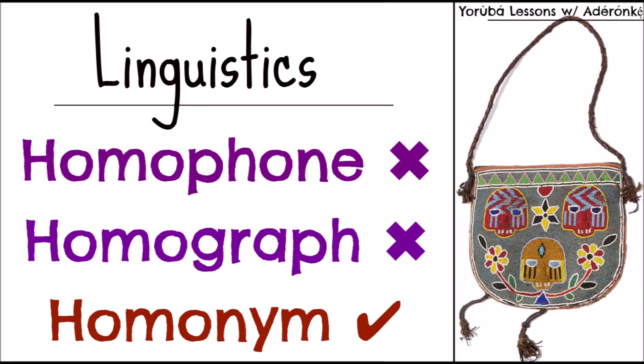So homophones, homographs and homonyms. Homophones and homographs don't exist in the Yoruba language, but homonyms do. However, we have semi-homographs and I'm going to talk about them soon. Among the three, homonyms are the ones that exist.